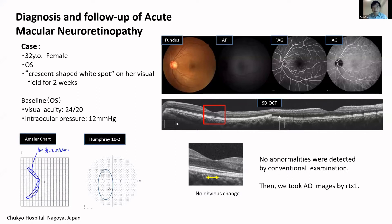The case is a 32-year-old female who visited our hospital for a crescent-shaped white spot on her left eye, which she had for two weeks. Her visual acuity was normal, but in the Amsler chart, which represents her subjective vision, there was a crescent-shaped scotoma on the temporal area of the center.